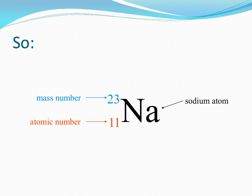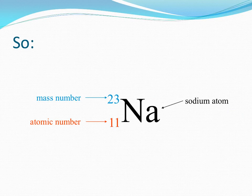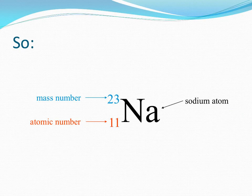Here is an example. This is read as 23-11 Na. 23 is the mass number of this particular sodium atom, and 11 is the atomic number of sodium. From this we can deduce that because the atomic number equals the number of protons, this sodium atom — and in fact all sodium atoms — has 11 protons. It also must have 11 electrons, because in a neutral atom the number of protons equals the number of electrons. It has 12 neutrons; the number of neutrons is found by taking the atomic number from the mass number: 23 minus 11 equals 12 neutrons.